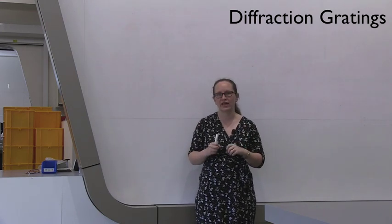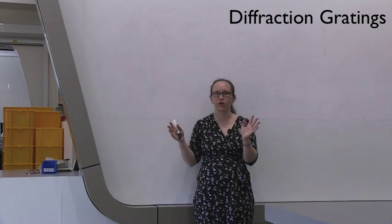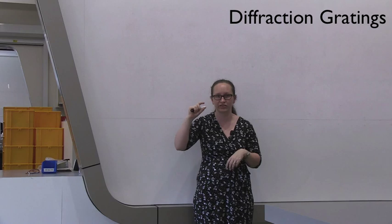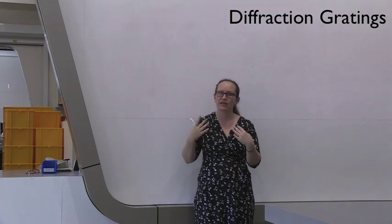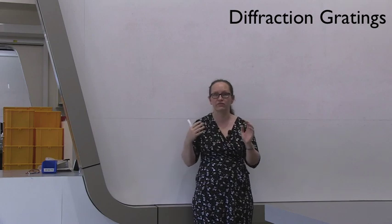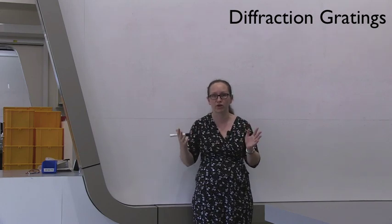Firstly, you're going to use a sodium light with known wavelength to measure the spacing between the lines on the diffraction grating, and then you're going to use this diffraction grating to measure the wavelengths of the lines produced in the mercury spectrum.